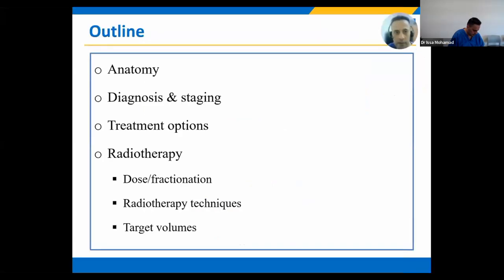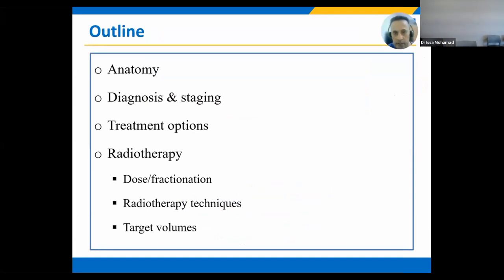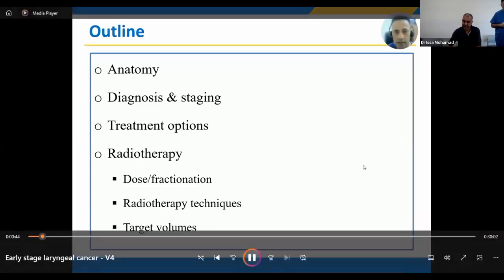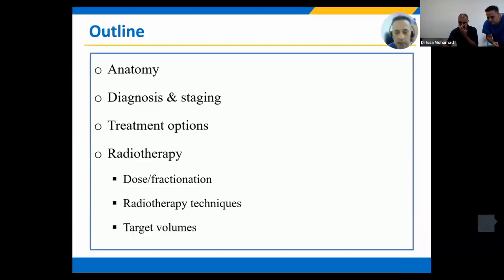In the next 25 minutes, I will discuss key anatomical features important for understanding laryngeal cancer and its treatment, explain the diagnostic process for early stage disease, discuss the staging criteria and its significance in treatment planning, outline the various treatment options, emphasize the role of radiotherapy, discuss radiation doses and fractionation schedules, explain the rationale behind chosen doses and schedules, describe the different radiotherapy techniques, define target volumes for radiation therapy, and then conclude.